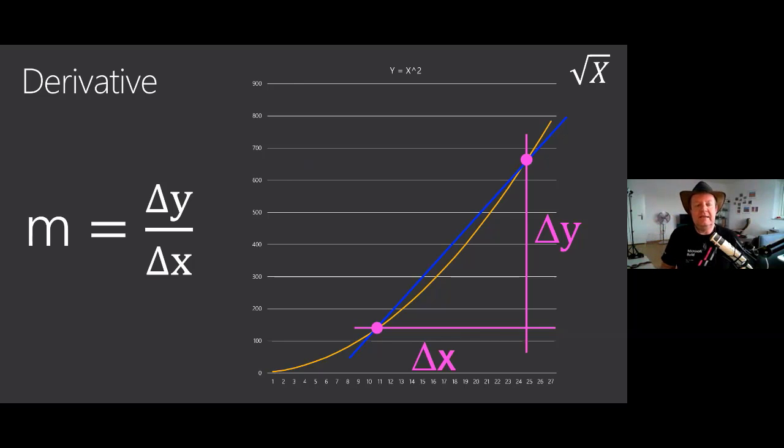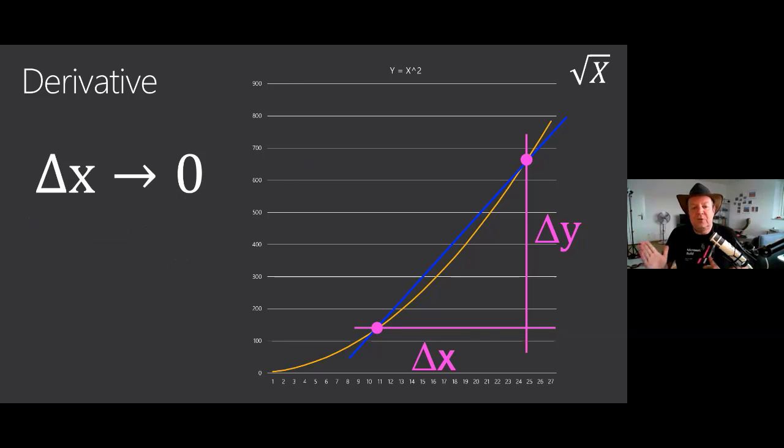And of course that gives us some information about the slope of this blue line. But if we want to know the slope of the orange line at the point X, what we can do is say let's reduce the value of X. Let's make this delta X here smaller and smaller. And in maths we say that we let delta X tend to zero.